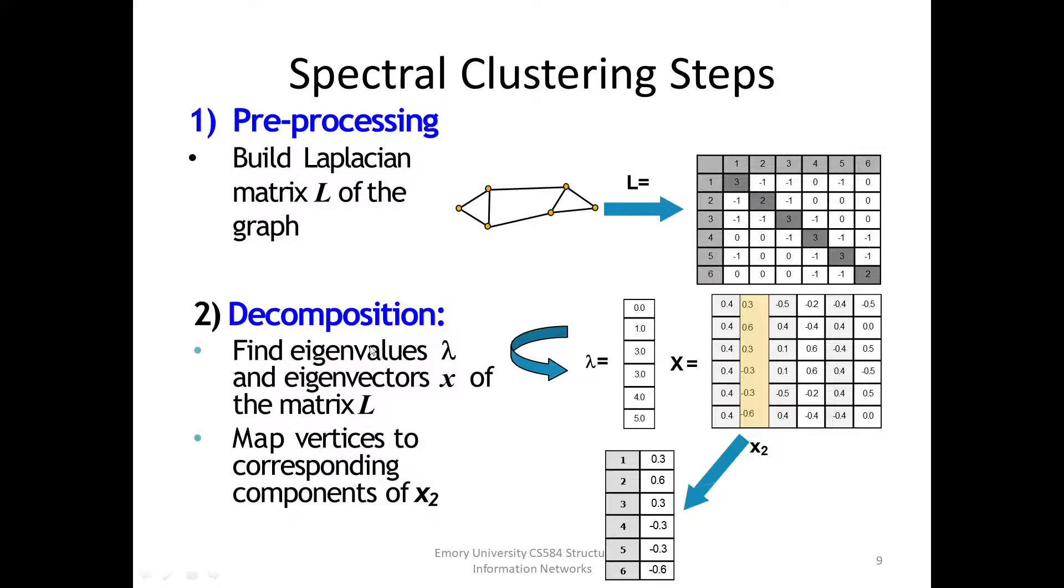Secondly, decomposition. Find eigenvalues lambda and eigenvectors X of the Laplacian matrix L. Notice that the eigenvalues lambda are sorted from the smallest to the largest. Then, map vertices to corresponding components of the second eigenvector X2.